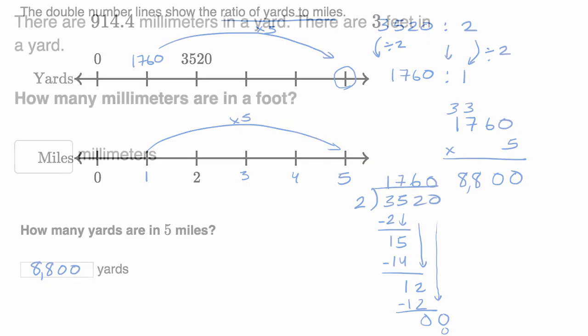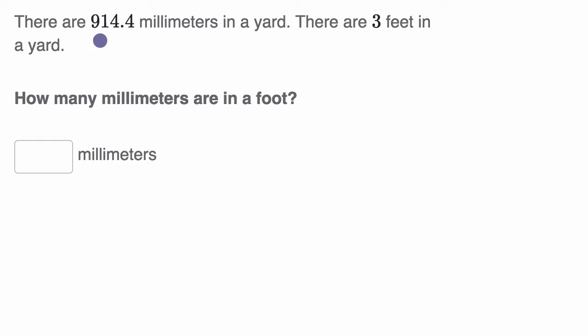Let's do a few more examples. Here we're told there are 914.4 millimeters in a yard. There are three feet in a yard. How many millimeters are in a foot? Okay, so one way to think about it, you could say there's 914.4 millimeters per yard, or you could say 914.4 millimeters per three feet, since three feet and a yard is the same thing. So if you want to know per foot, you would just divide both of these by three. So let's do that.